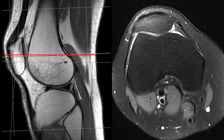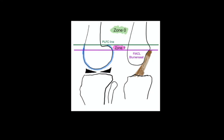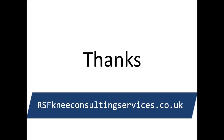Here, we are measuring the sulcus angle at the level of the posterior femoral condyle line. In conclusion, we use two simple reference lines — the posterior femoral condyle line and the femoral insertion of the anterior cruciate ligament — to assess the shape of the trochlea. These two lines define two trochlea specific zones: zone 0 is above the posterior femoral condyle line, and zone 1 is between the posterior femoral condyle line and the femoral insertion of the anterior cruciate ligament line. Thank you for watching this video.